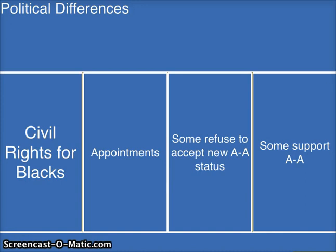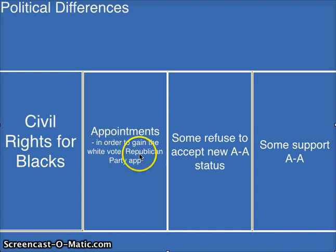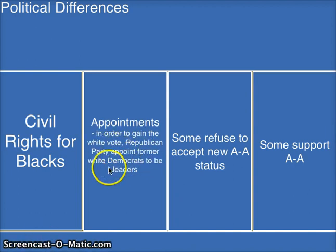But there are some political differences. With the further gaining of civil rights for African-Americans in the South, it will not come easily. The Republican Party, which has majority black support, is trying to gain more white support in the South. So they appoint former white Democrats to be leaders of the Republican Party in the South — but this backfires. Southerners don't really vote Republican because of this, and it makes many African-Americans feel rejected by the Republican Party.